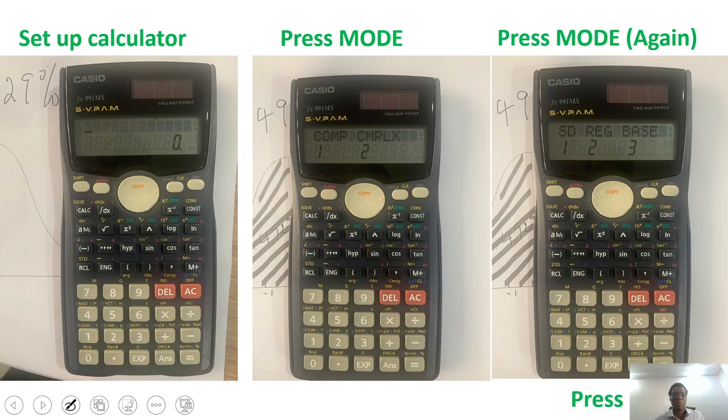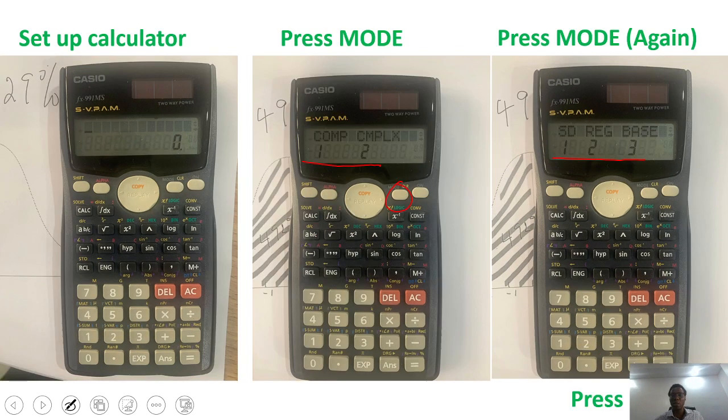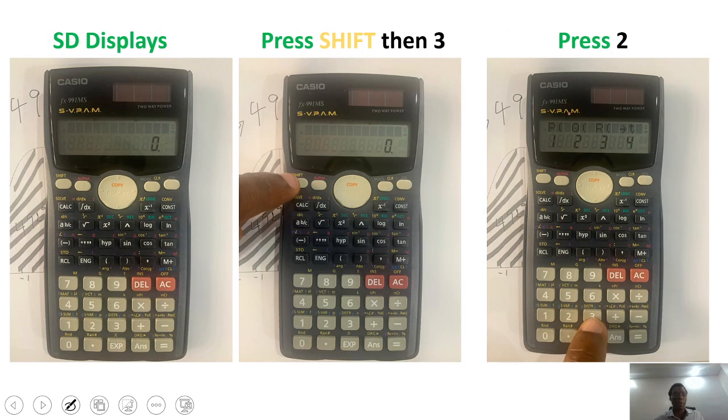mode twice. If you press it the first time, this is what you see. If you press the second time, you see this. Then you'll select 1, which represents standard deviation. Select 1, and once you do that, the calculator will display SD at the top. That way your calculator is set up and ready for use.